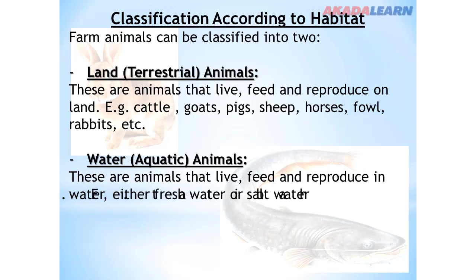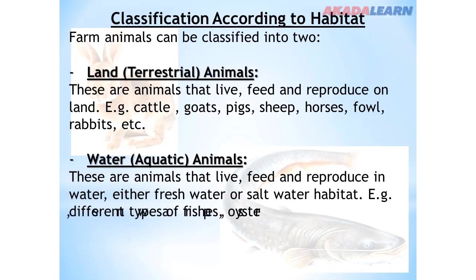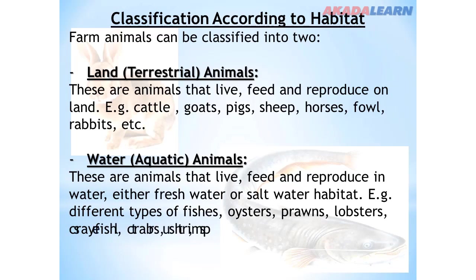Water or aquatic animals are animals that live, feed, and reproduce in water, either freshwater or saltwater habitat. Examples of such animals include fish, oysters, prawns, lobsters, crayfish, crabs, turtles, and many more.